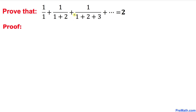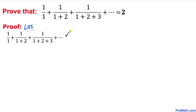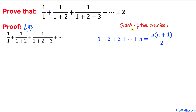Let's focus on the left hand side. Here I have written down the left hand side, and now let's focus on the denominator — the sum of the series 1 plus 2 plus 3 and so on. Let's recall the sum of series formula: 1 plus 2 plus 3 all the way to n equals n times (n plus 1) divided by 2.